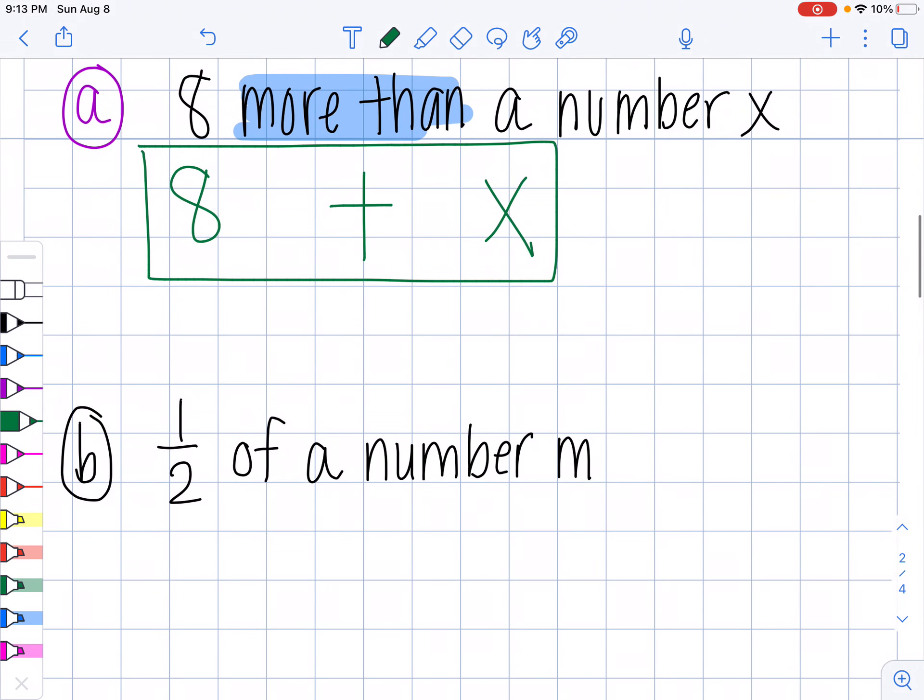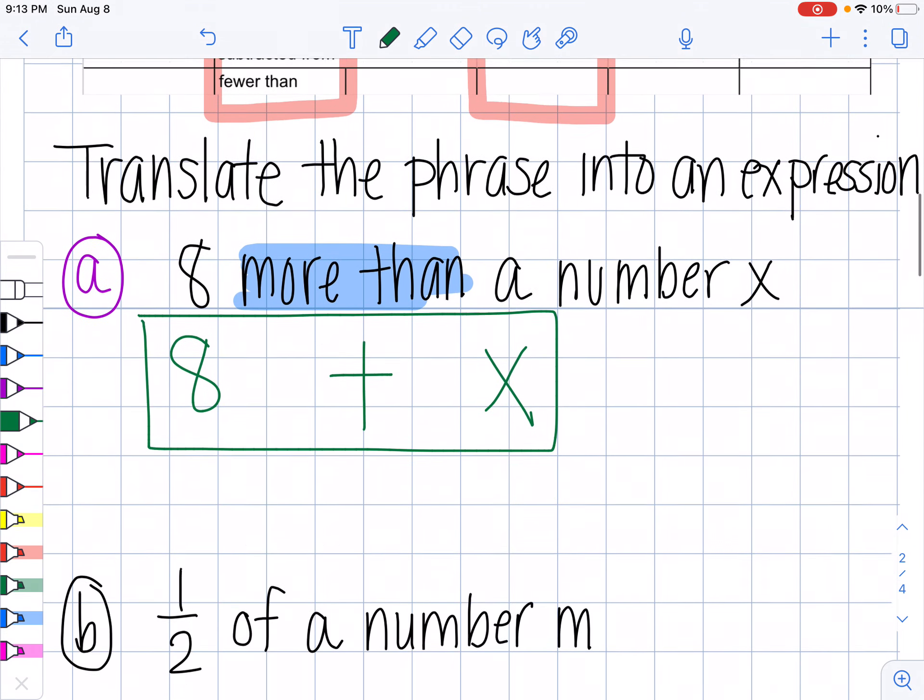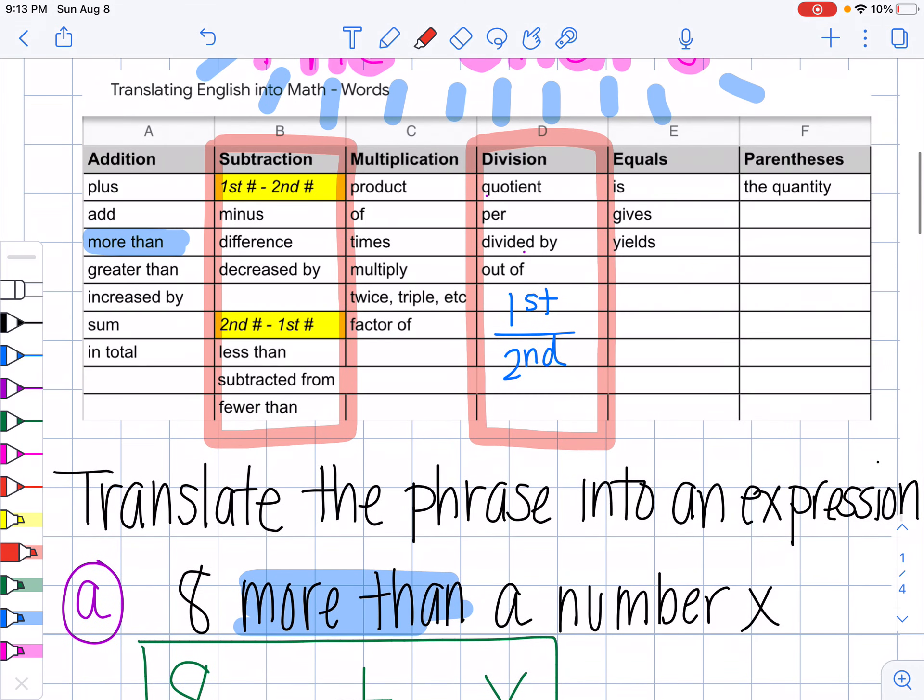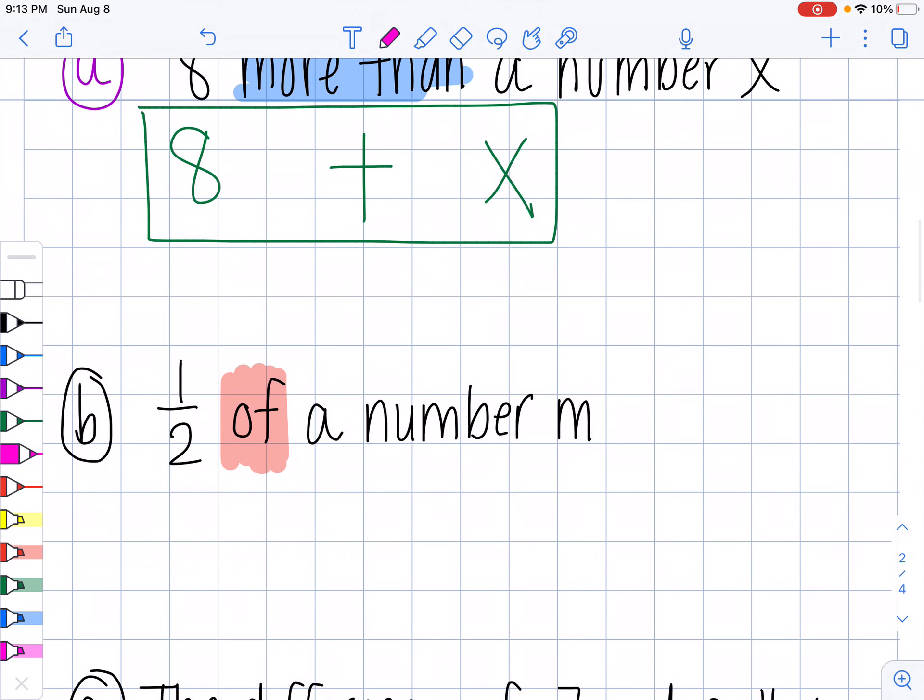Half of a number M. All right, so of is my keyword right here. So if I come to look for of, of is right here. Of means multiplication. So I'm going to write half of means multiplying. I'm just going to put parentheses, a number M. So that means it's really just one half M. Final answer.